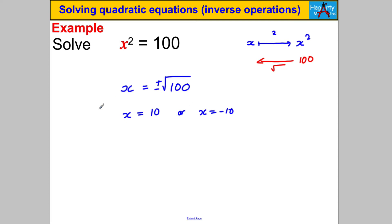Make sure that makes sense: a positive times a positive — 10 × 10 = 100 — but also negative 10 × negative 10 = 100. Go back and look at your squares and square roots videos in the number strand if this isn't making sense.